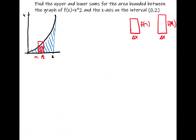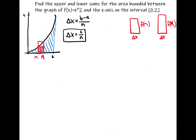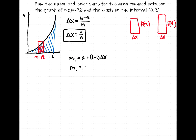So what do we know? Well, Δx, the width of the rectangle, is equal to (b − a)/n, or in this case Δx = 2/n. For the left endpoints, which we denote lowercase m sub i, that's equal to a plus (i − 1) times Δx. In this case, a = 0, so it's 0 plus (i − 1) times (2/n), which gives us (i − 1) · (2/n).